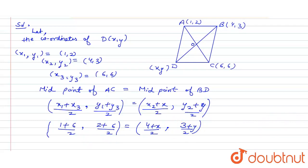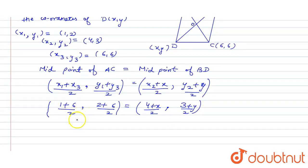This will be equal to 7 by 2 comma 4 equals to 4 plus X upon 2 and 3 plus Y upon 2.